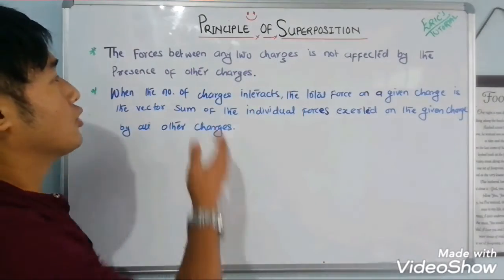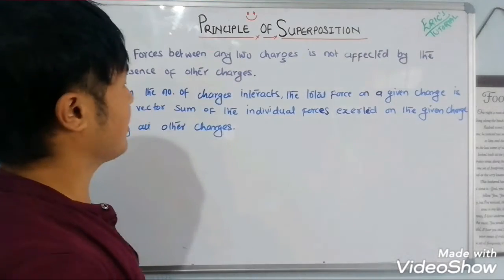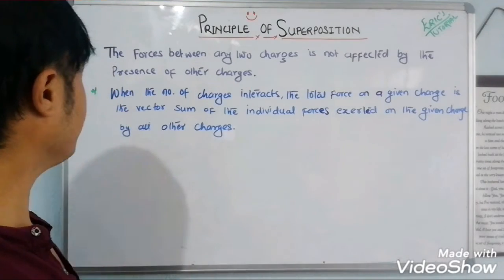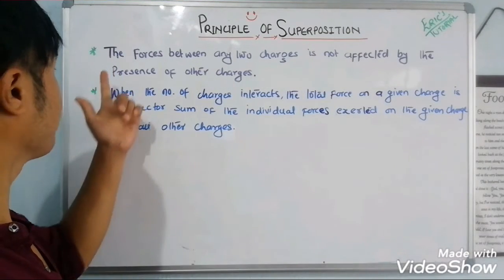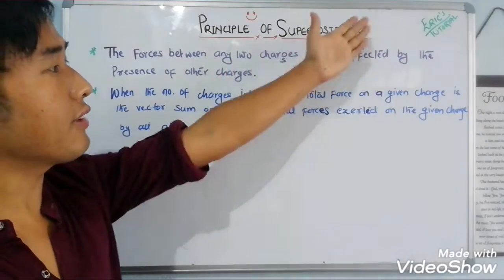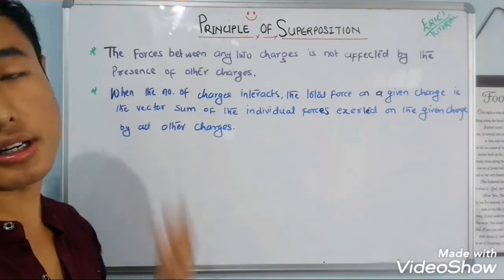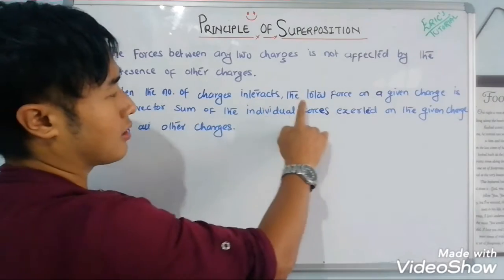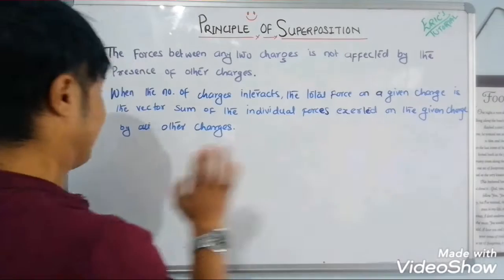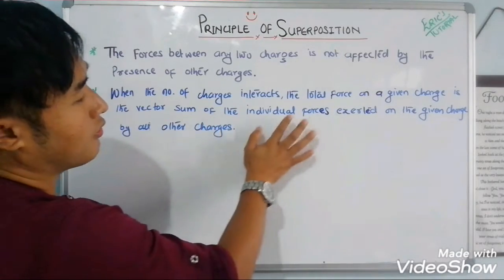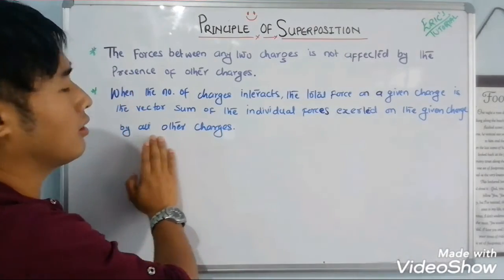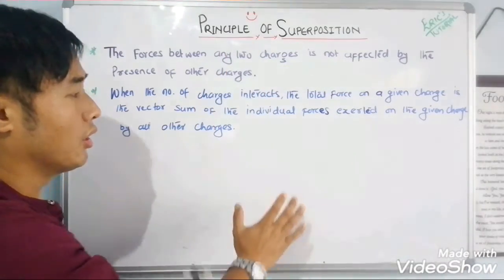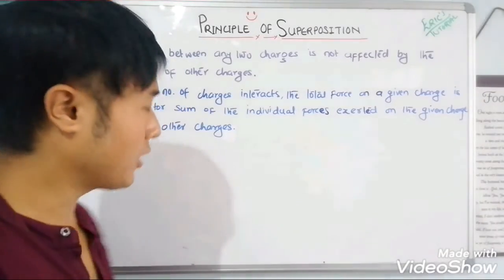To understand the Principle of Superposition, we have to know two main points. Number one point is: the forces between any two charges is not affected by the presence of other charges. And number two point is: when a number of charges interact, the total force on a given charge is the vector sum of the individual forces exerted on the given charge by all the other charges. We will get to know point two in this video.